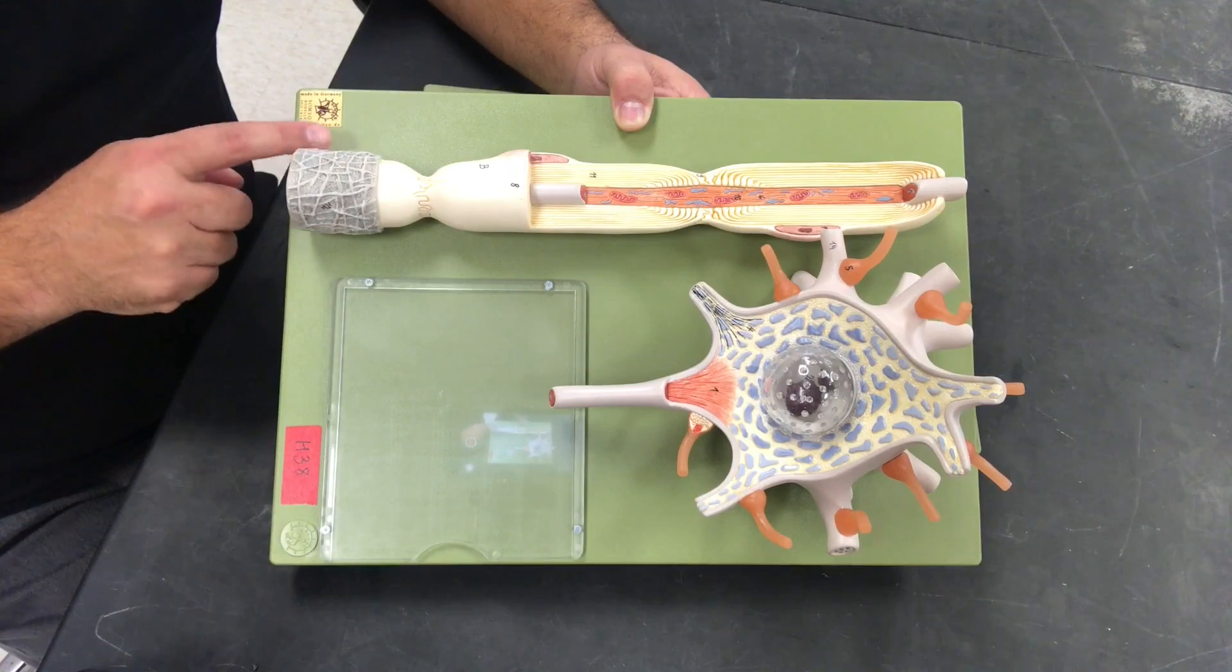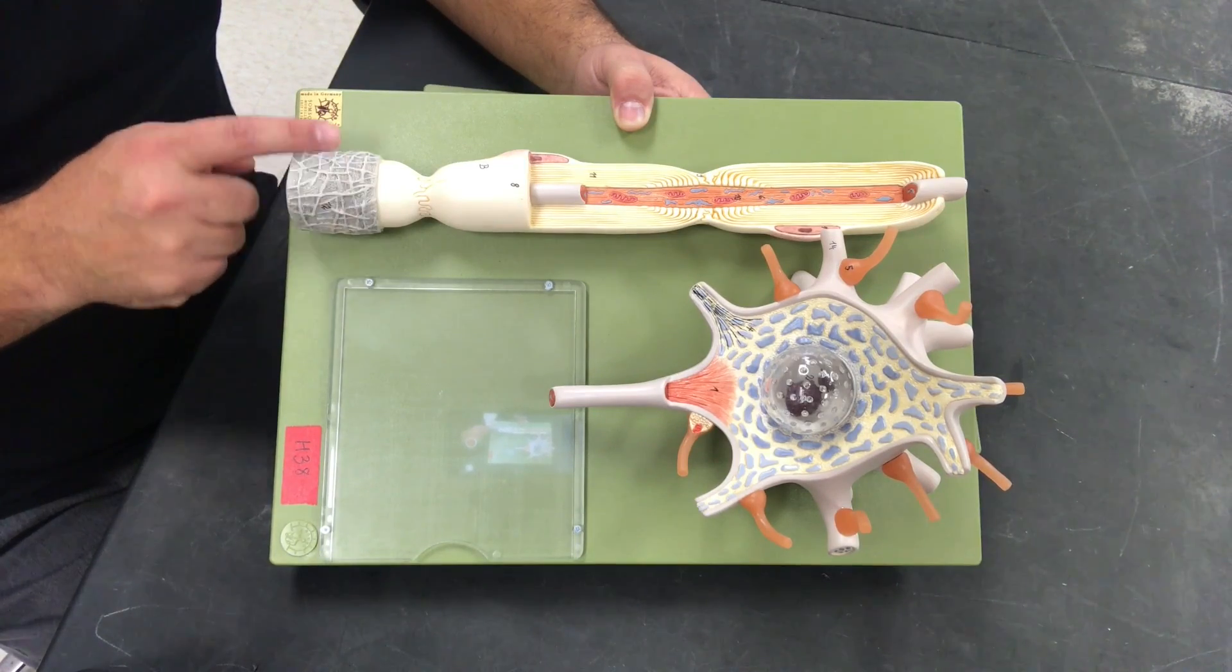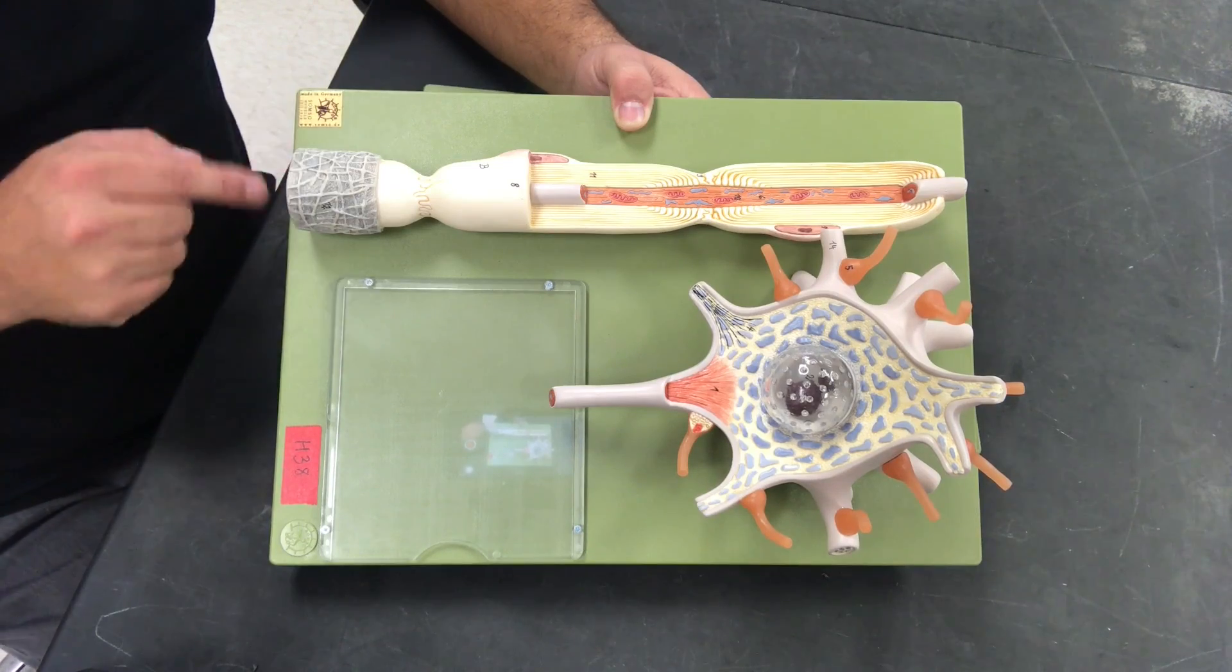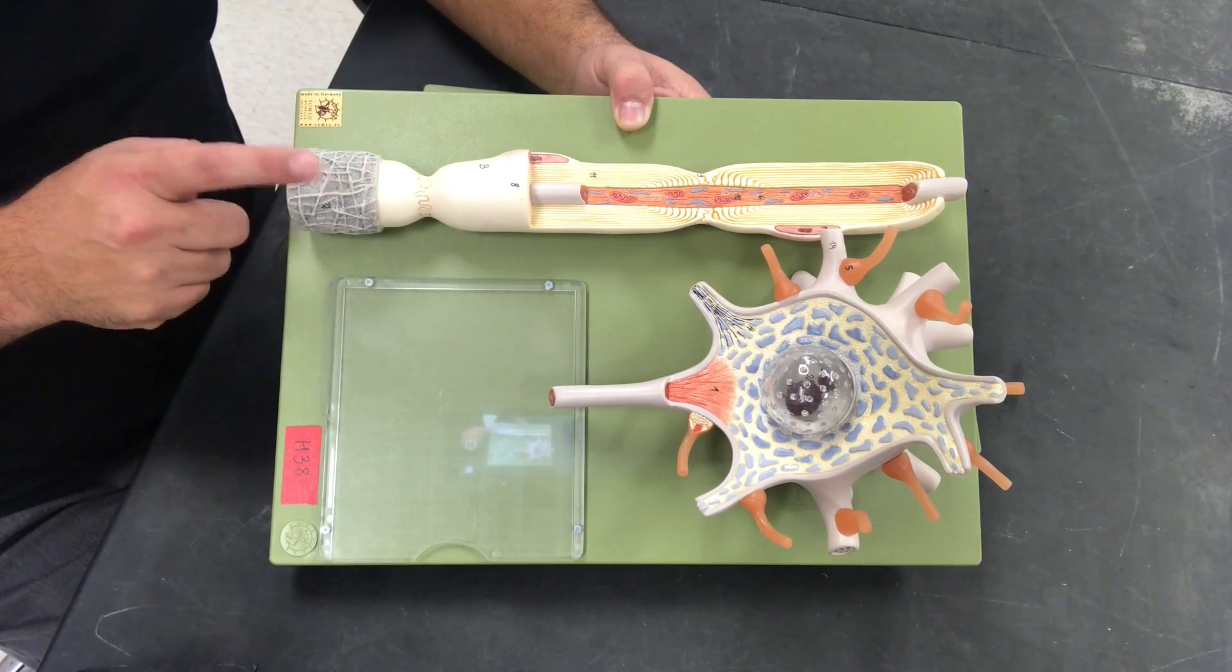We have this gray connective tissue, remember the connective tissue that lines and circles an entire axon, an entire multipolar neuron, is called the endoneurium.